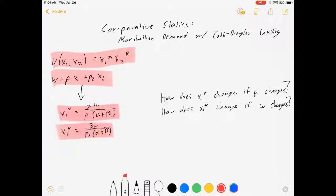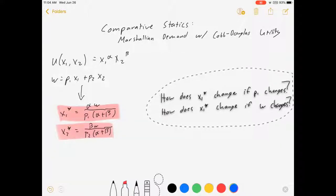The level of x that will result for any given set of parameters. Something we might be interested in are questions like these: How does our demand for x1 change if the price changes? Or how does the demand for x1 change if w changes?